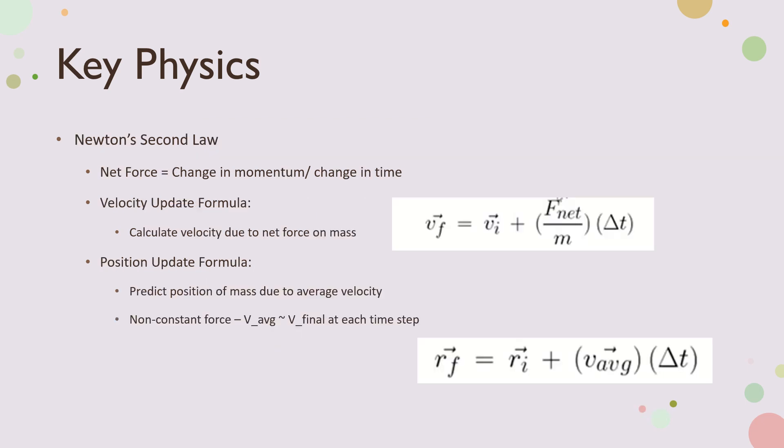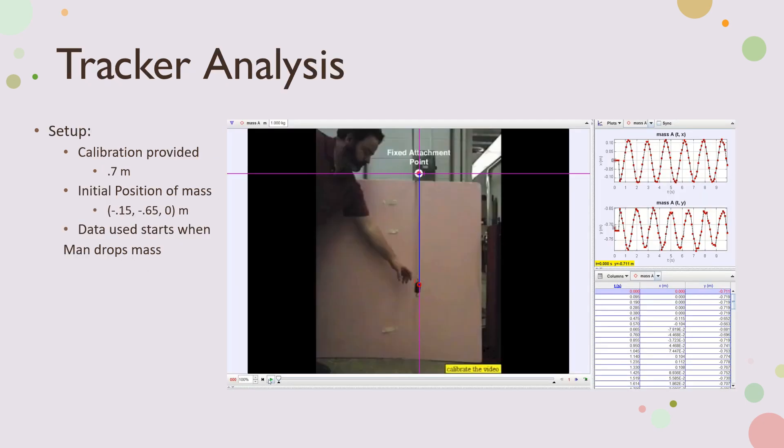We also have Newton's second law. Like always, we have the net force is the change in momentum over time. We have the velocity update formula, which we use to update the velocity through the net force on the mass, and the position update, which predicts the position of the mass due to average velocity. But for this, because it's a non-constant force acting on the mass, v average is approximately equal to v final at each time step.